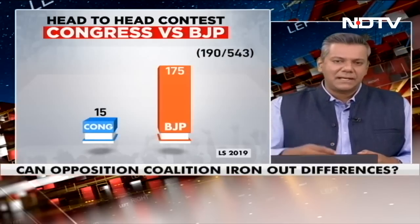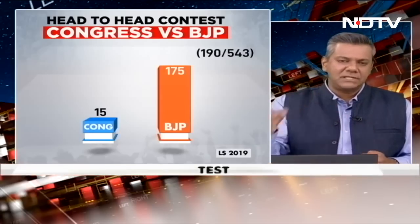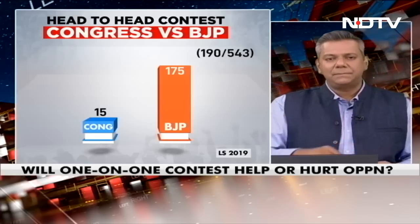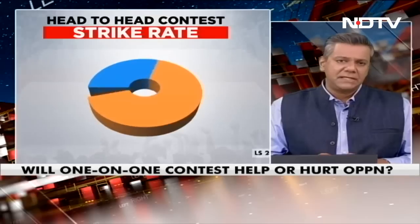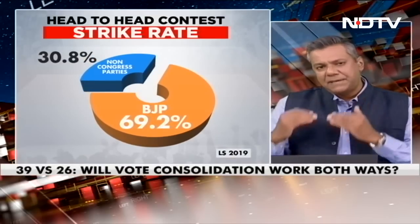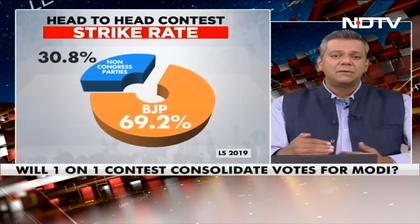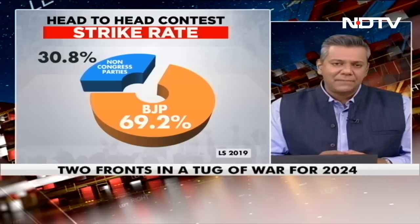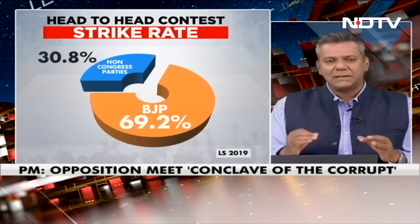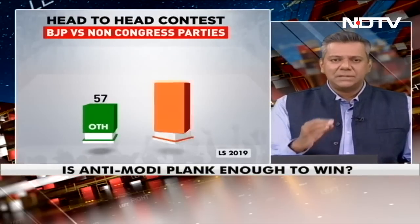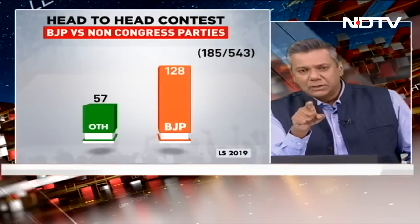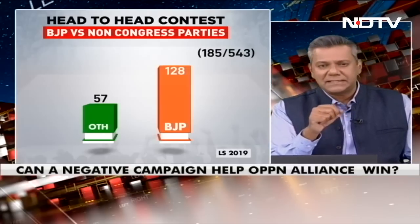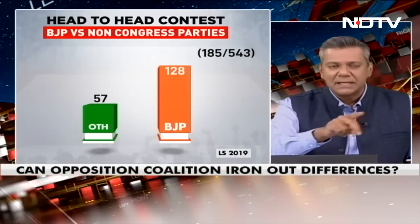In the Lok Sabha election 2019, the head-to-head contest between Congress and BJP took place in 190 seats, with the BJP winning 175 and the Congress just 15. The head-to-head strike rate between the BJP and non-Congress parties is interesting — the BJP is actually lower in those contests: BJP at 69.2 percent, non-Congress parties at 30.8 percent. In the Lok Sabha election of 2019, there were 185 seats where they contested against each other, with the BJP winning 128 and others winning 57.